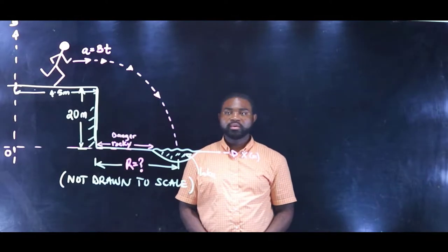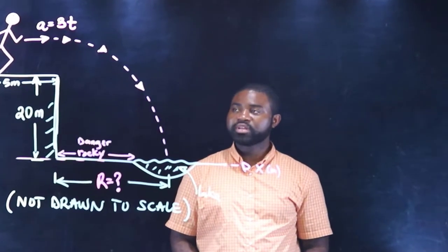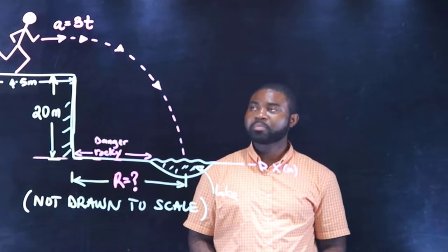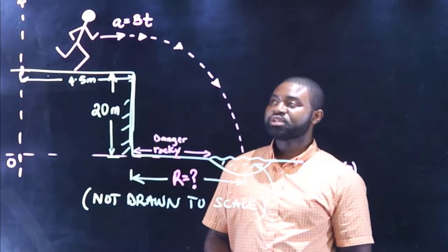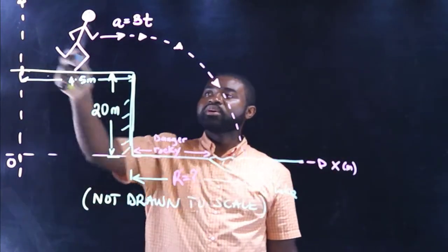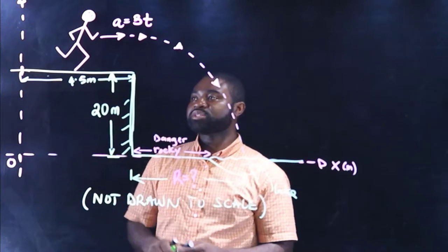Hi everybody, before us we have a very interesting projectile problem. We have a journey here. He runs, he starts from rest at a certain point and runs such that his acceleration as a function of time is given by 3t.